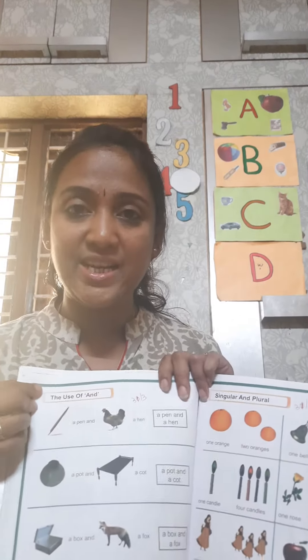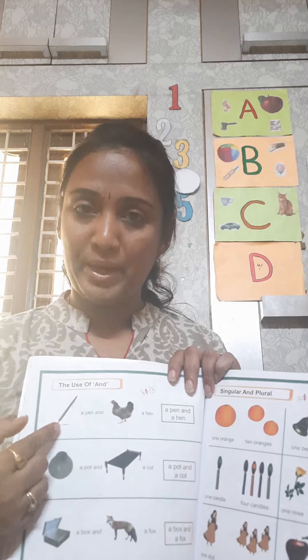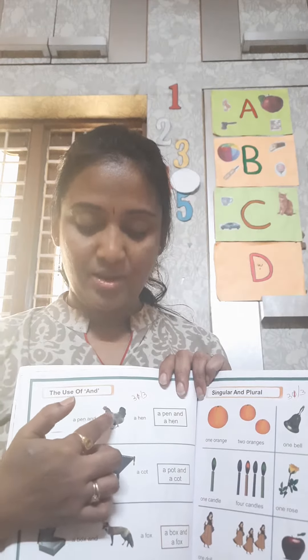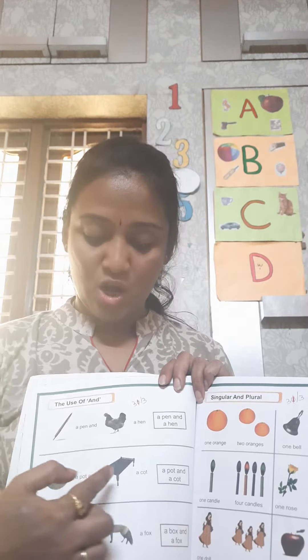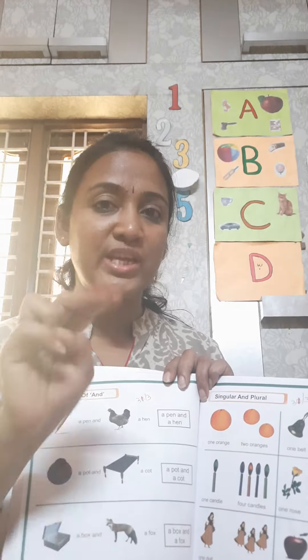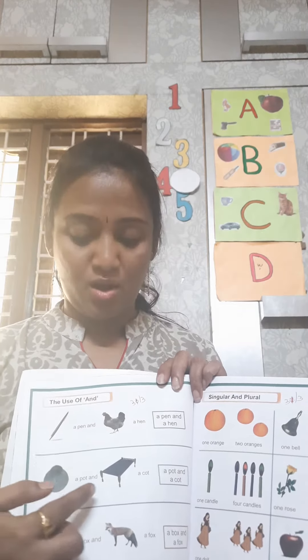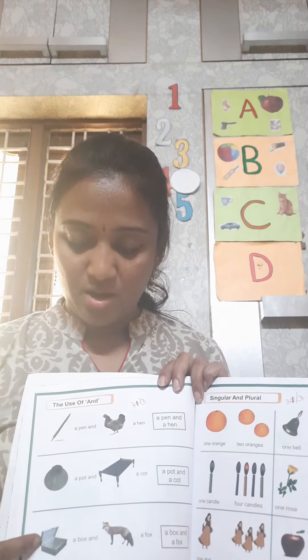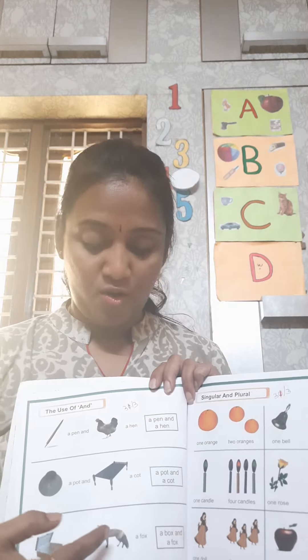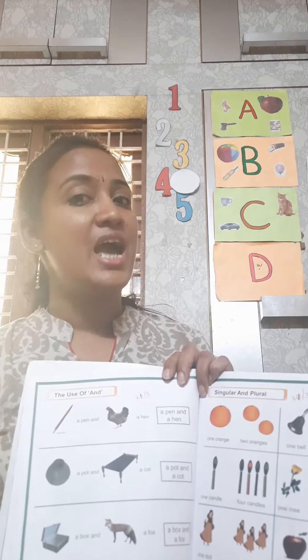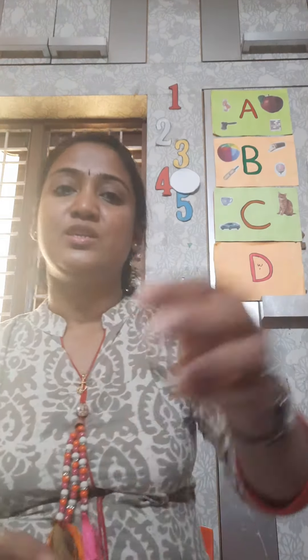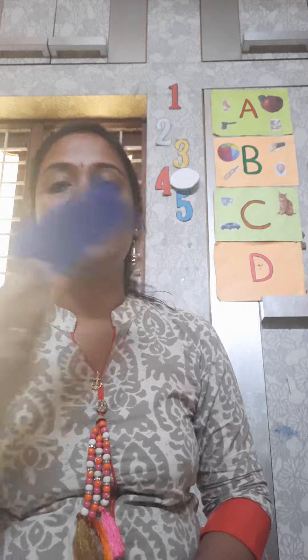What you can see here? You can see a pen and a hen. A pot and a cot. There are two things, right? A pot and a cot. A box and a fox. An apple and an orange. A mask and a duster.